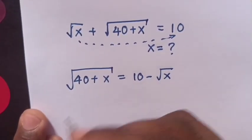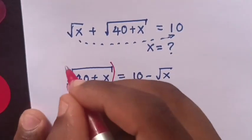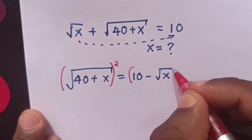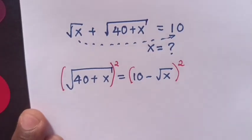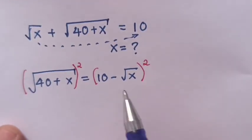Then, to remove the square root, we square both sides. So the square will cancel with the square root.